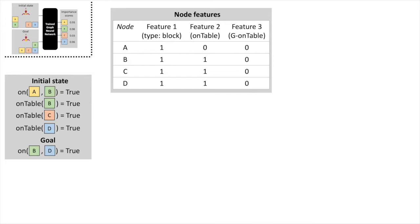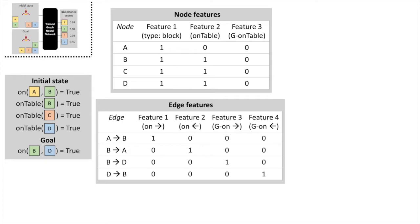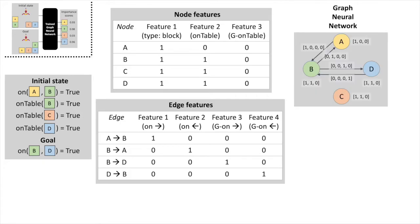Its features are the unary expressions referencing that object, in either the initial state or the goal. The features of each edge are the binary expressions referencing that pair of objects, in either the initial state or the goal, and in either argument order. Having constructed this graph, we run several iterations of message passing to obtain the set of importance scores, one per object.